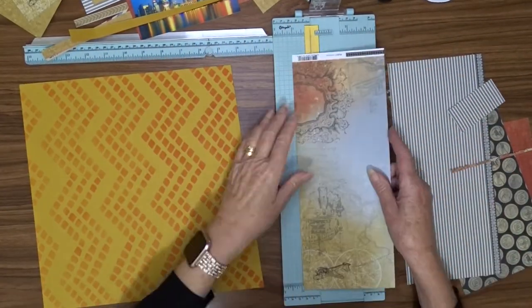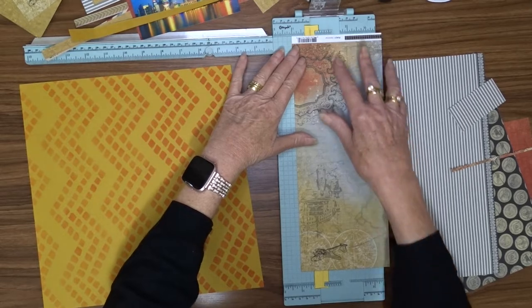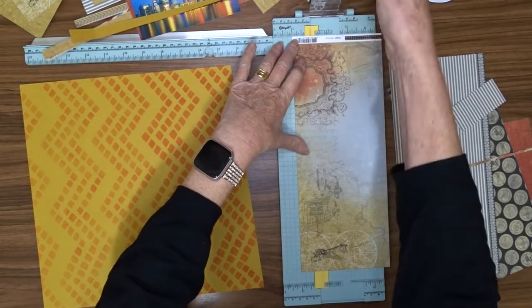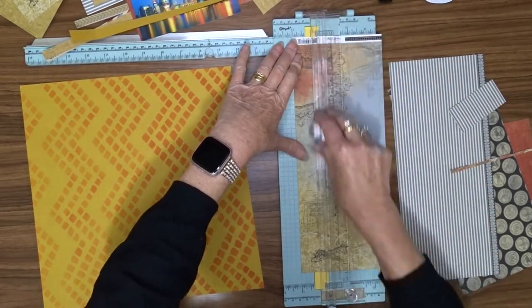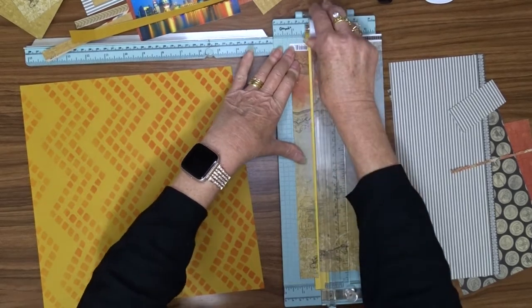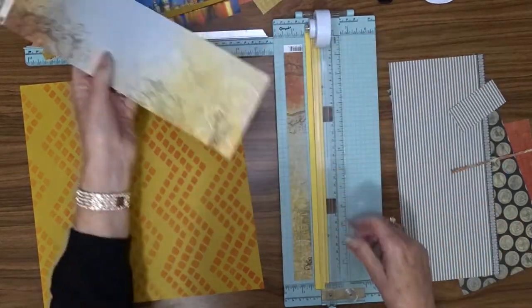The pattern paper I'm going to use behind that is also from the Kaiser Craft Now Boarding range, and this one is called Terminal. So I'm just cutting a one inch strip by the full 12 inch width.